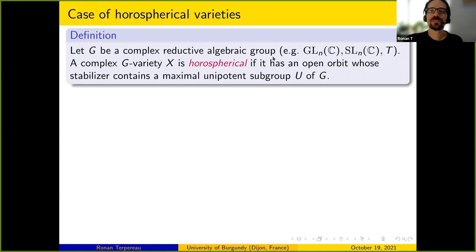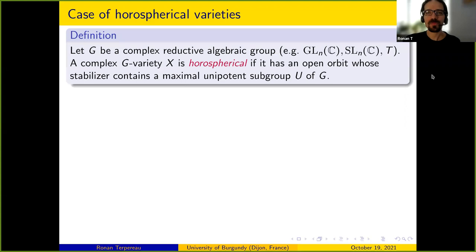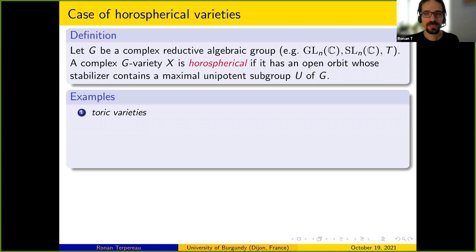Let G be a complex reductive algebraic group — think GLn, SLn, or a torus. A complex G-variety is horospherical if it has an open orbit whose stabilizer contains a maximal unipotent subgroup U of G. For instance, if G = GLn(C), a maximal unipotent subgroup is given by upper triangular matrices with ones on the diagonal, and any maximal unipotent subgroup is conjugate to this.